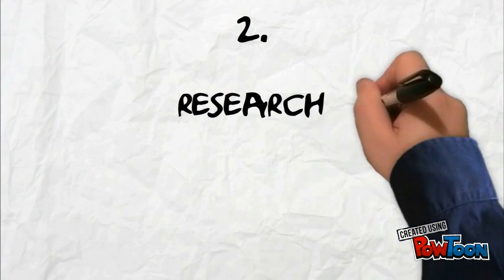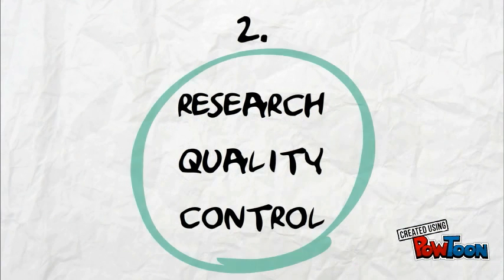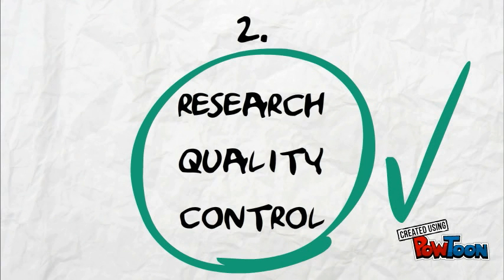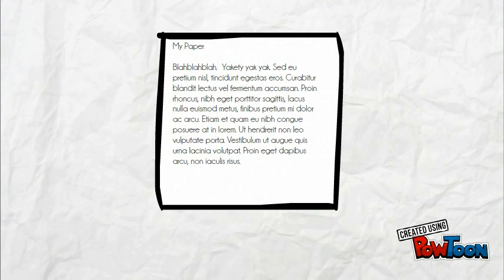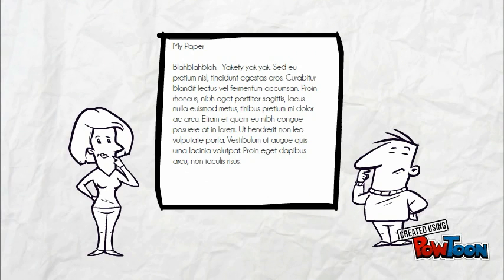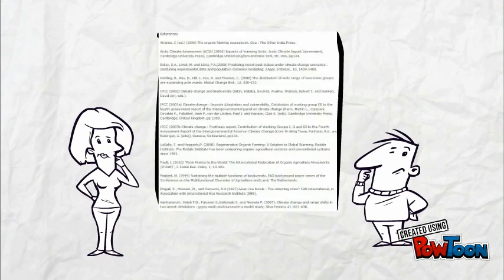The other important reason to cite is that citations are some of the best clues available for determining the accuracy of a research paper. The quality of the sources listed tells the reader how well-researched the piece is, and also provides a useful path to additional literature on the same topic.